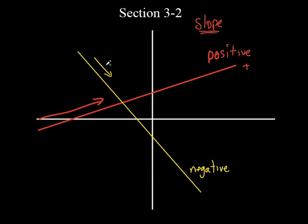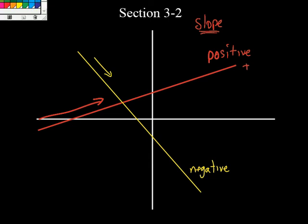From left to right it's going down, because some people look at it and say, yeah, but if you're walking the other way you're going up. But I'm talking left to right — just the way we read. We read left to right. So if we go left to right and we go up, it's positive. If we go down, it's negative.